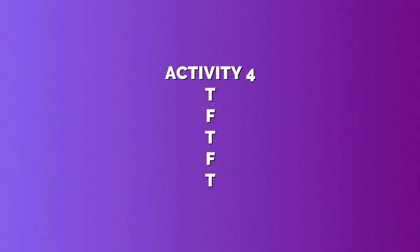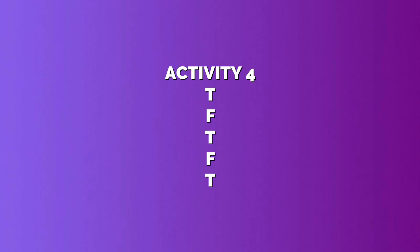In Activity 4, write T for true and F for false sentences. 1. In India, there are many types of classical dances — that's true. 2. Kathakali dance originated in Northern India — the answer is false, because Kathakali is from South India. 3. Sitar is a musical instrument — that is true. 4. In India, there is only one form of classical music — that is false. 5. Tansen was a great vocalist — that is true.